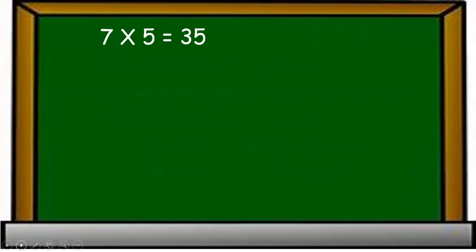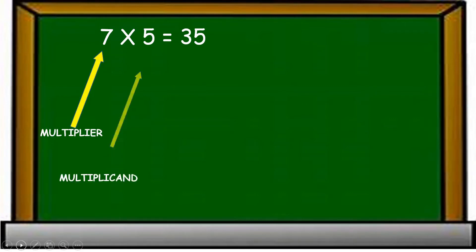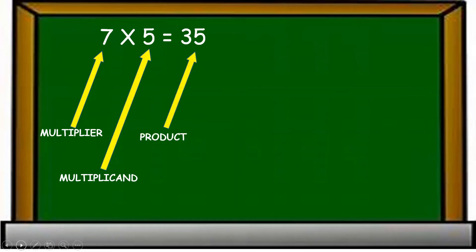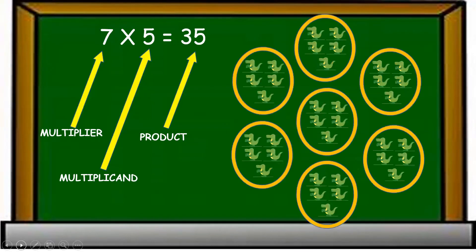Let us take another example: seven into five equals 35. Here, seven is the multiplier, five is the multiplicand, and 35 is the product. It also means there are seven groups of five each, which makes 35 in all.